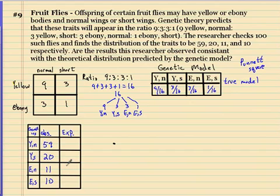We took 100 in all, so n equals 100. To find the expected, we would just do 100 times 9 over 16. This would be the expected yellow and normal.